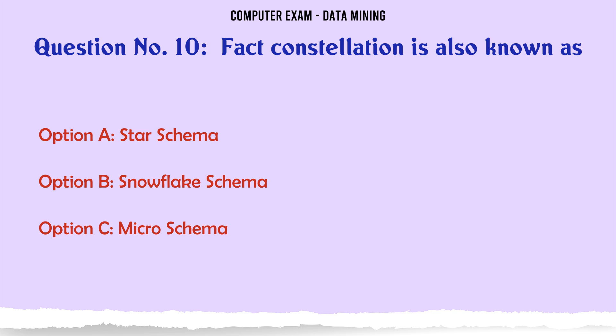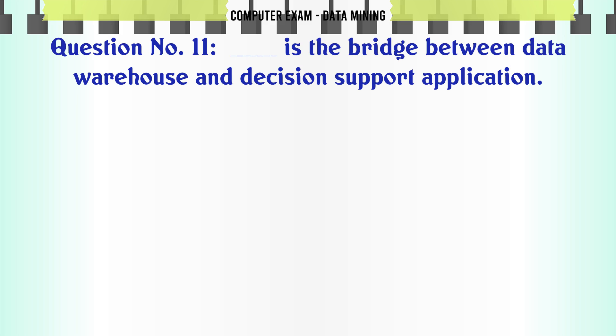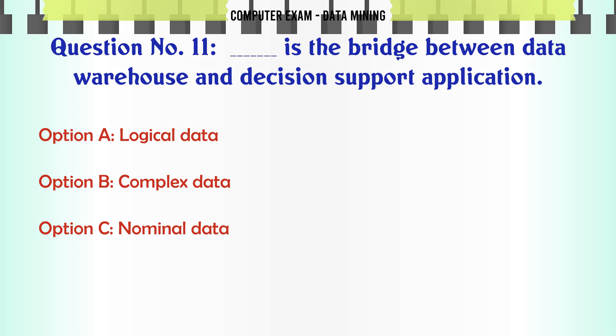Fact constellation is also known as: A. Star Schema. B. Snowflake Schema. C. Micro Schema. D. Galaxy Schema. The correct answer is Galaxy Schema.